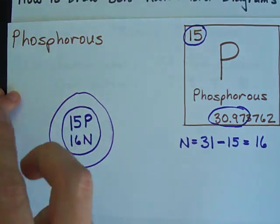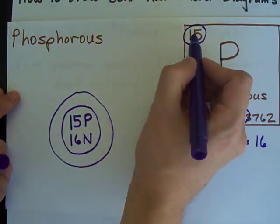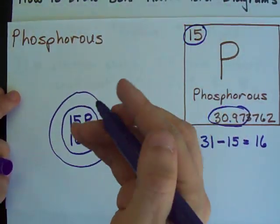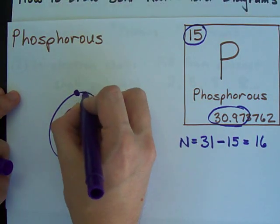You can put up to two electrons in here. Now I need 15, so I definitely need these first two. One, two.